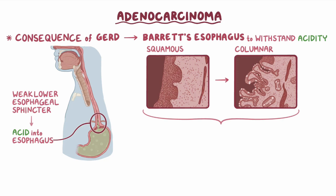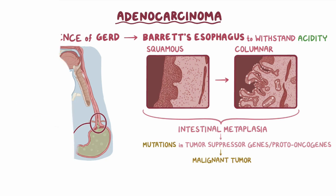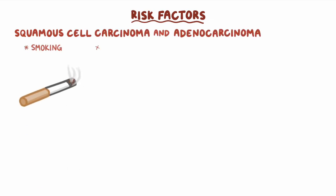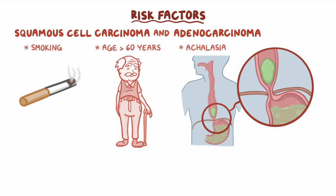This process is called intestinal metaplasia. Over time, just like with squamous cell carcinoma, mutations might accumulate in either tumor suppressor genes or proto-oncogenes that control the division of these metaplastic cells, ultimately resulting in a malignant tumor. Risk factors for both squamous cell carcinoma and adenocarcinoma include smoking, age over 60 years, and achalasia, which is when the smooth muscle of the lower portion of the esophagus doesn't work well, making it difficult for food to pass toward the stomach.